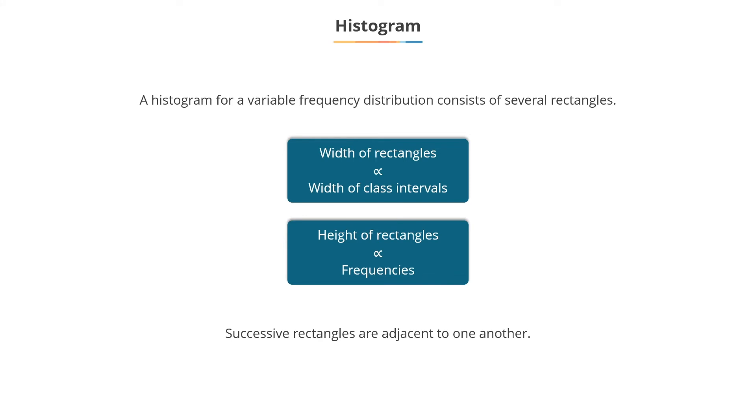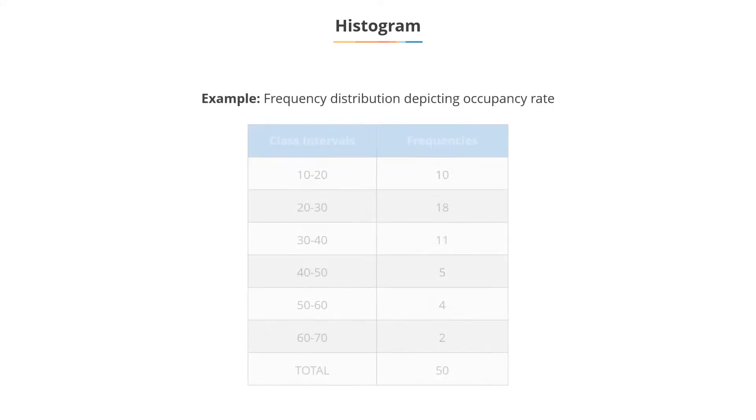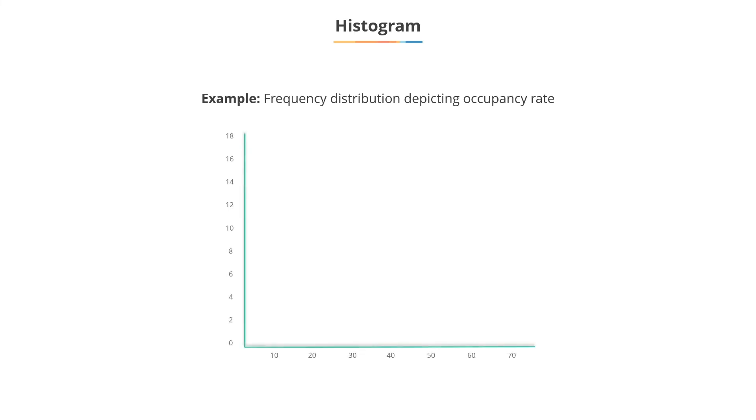Successive rectangles are adjacent to one another. Consider a frequency distribution table depicting occupancy rate. This is a histogram for the frequency distribution data depicting occupancy rate, with class intervals in the x-axis and frequencies in the y-axis.